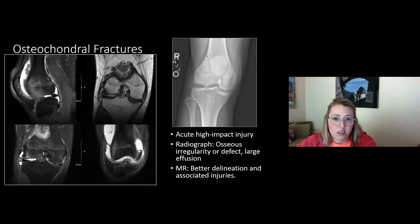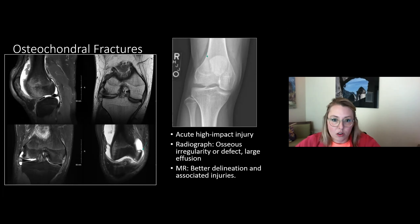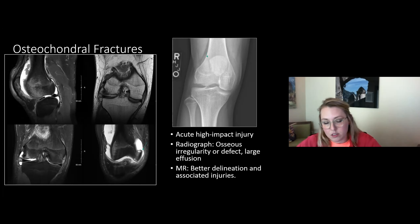Acute osteochondral fractures are a high-impact injury presenting immediately with severe pain and swelling and possibly inability to bear weight. On radiograph, you may see a large osseous defect from the lateral femoral condyle. On MRI, the coronal images show the large defect, and the radiologist's goal is to find the missing fragment — in this case a large fragment that relocated into the medial joint space — so surgeons know where to look arthroscopically.